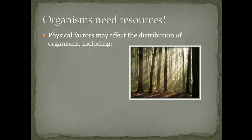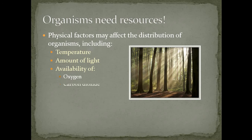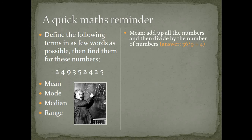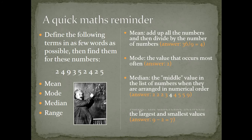Organisms need resources — physical factors like temperature, light, availability of oxygen, carbon dioxide, and water. Nutrients will have an impact on distribution, and we're going to focus really on plants in this particular lesson. In order to estimate population size, we need to brush up on our maths. Being a top set, you'll be able to do this with ease — by the time I've finished talking, you've probably already worked out the mean, the mode, the median, and the range of these numbers. The mean: add the numbers up and divide by how many there are. The mode is the most common, the median is the middle value, and the range is the difference between the largest and smallest values. We need these basic maths skills to be successful in estimating population size.